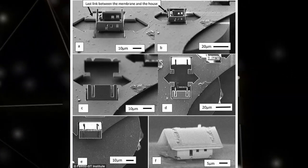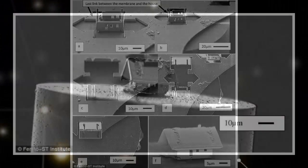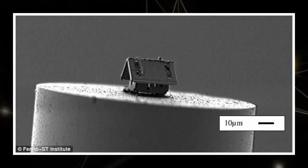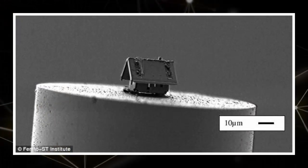The scientists said the process of building the micro house is not unlike making a giant dice from a piece of paper. A focused ion beam acts like scissors, tracing and cutting out the shape of the house.